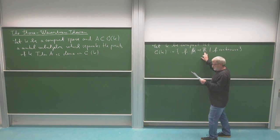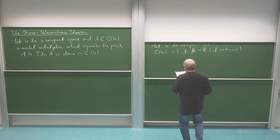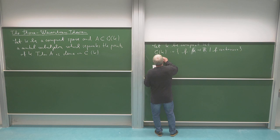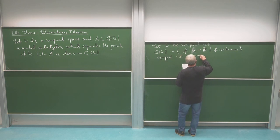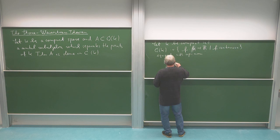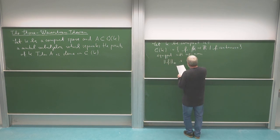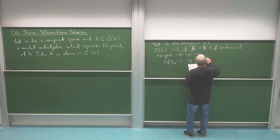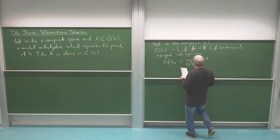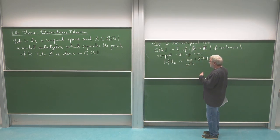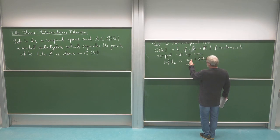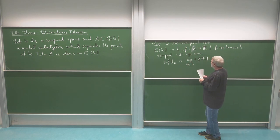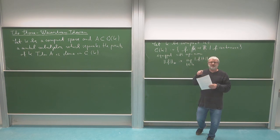This set is a Banach space if we equip it with the sup-norm. If I have a function F, the sup-norm — let me call it the F-infinity norm — is the supremum of the absolute values of F of T, as T runs over my compact set K. A continuous function on a compact set always attains its supremum, so the supremum is actually a maximum, meaning a continuous function on a compact set is bounded.